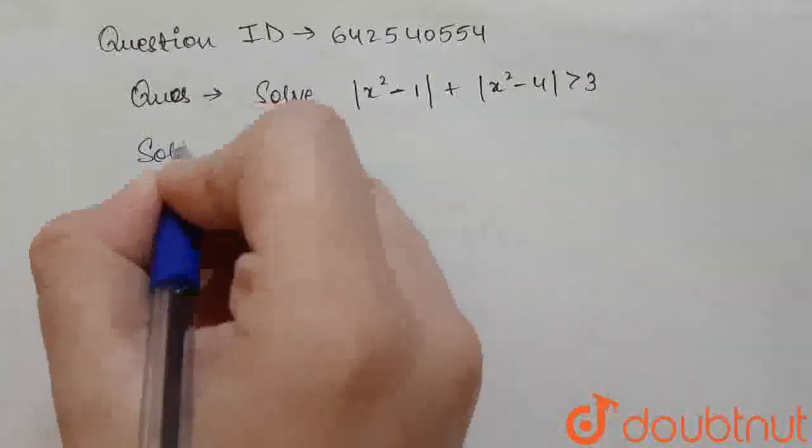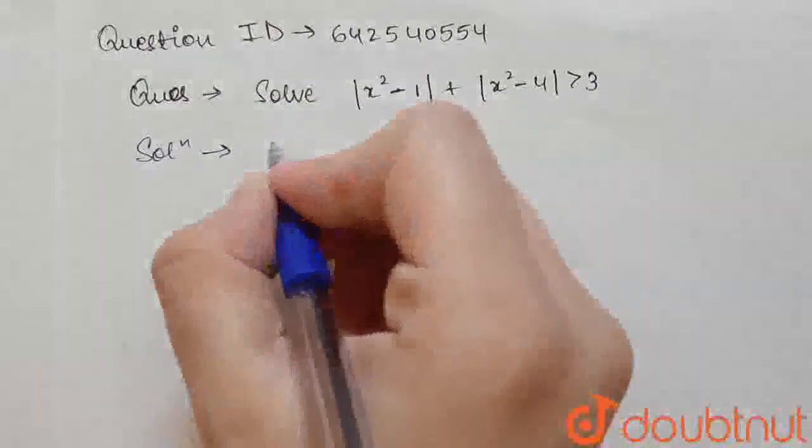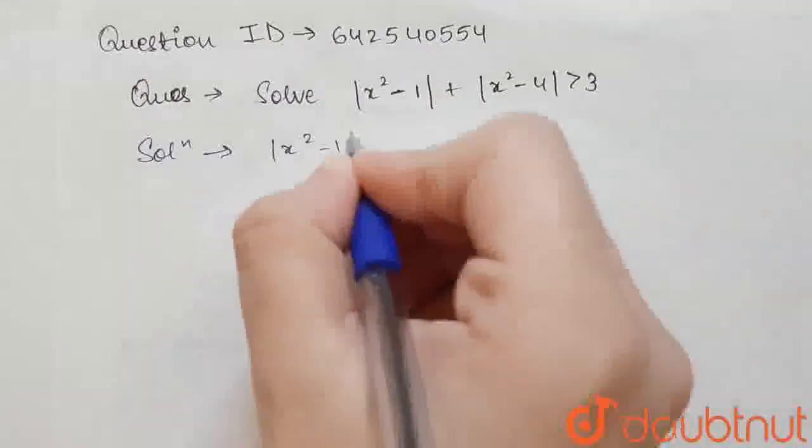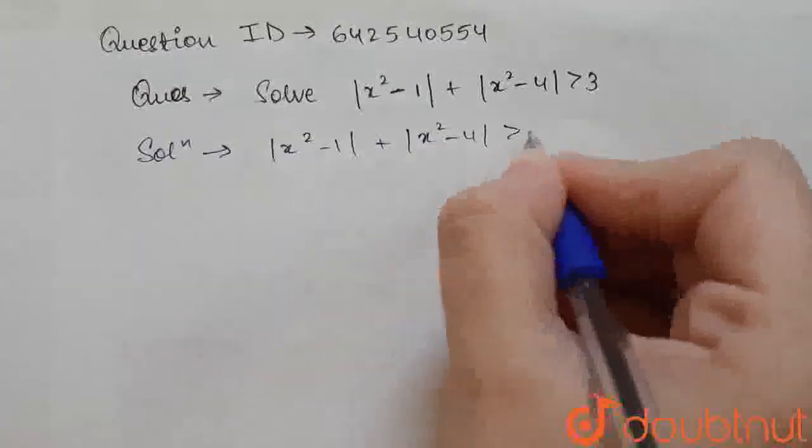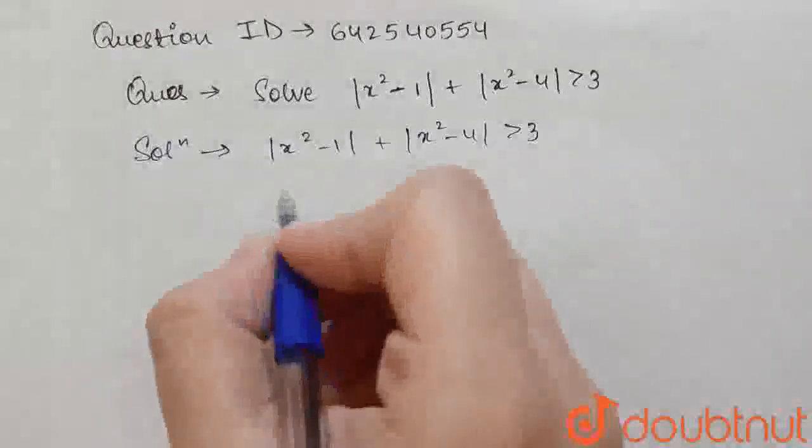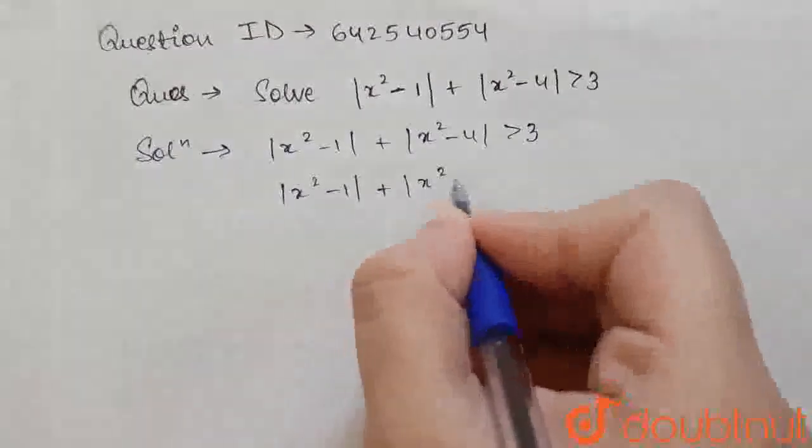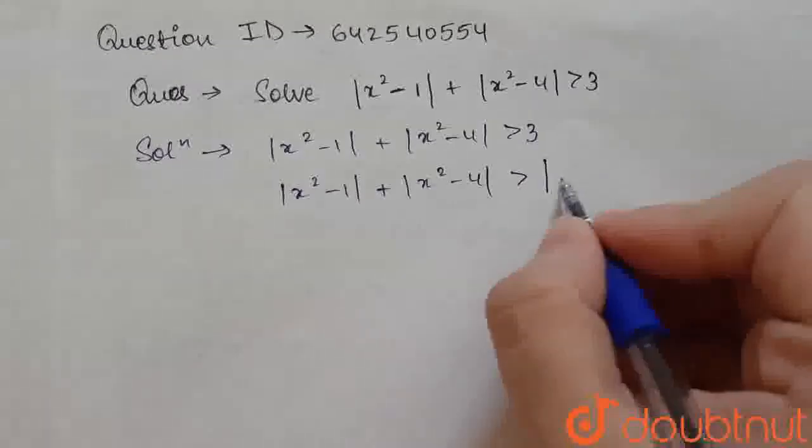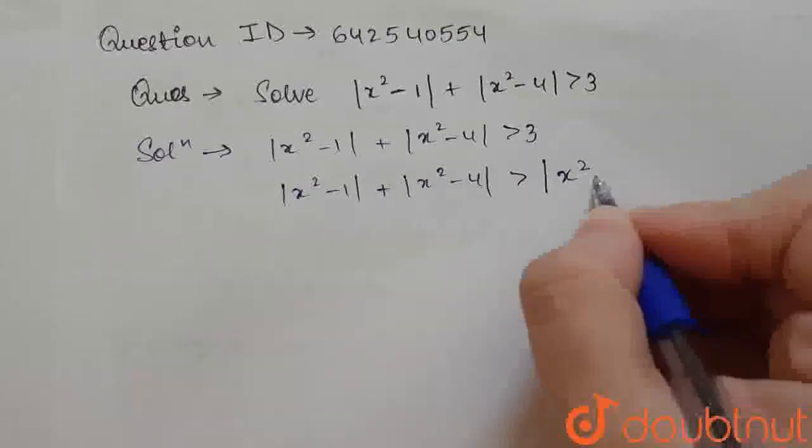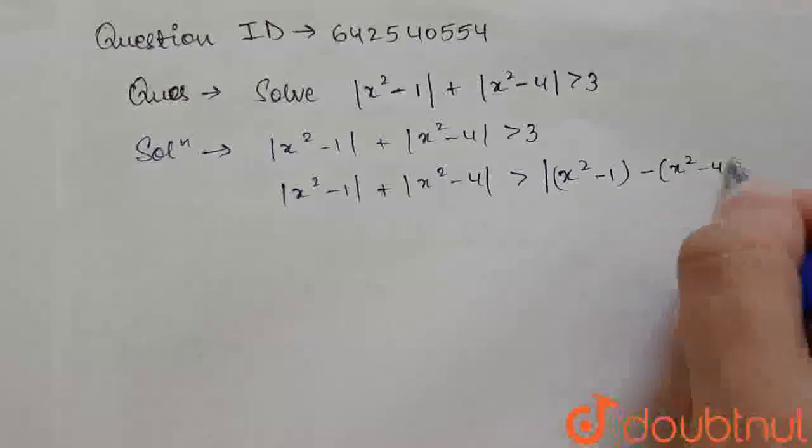So for solving this, firstly let's write the question. It is given to us: |x²-1| + |x²-4| > 3. Now we will write it as this plus this greater than, we will write it as x square minus 1 minus x square minus 4.